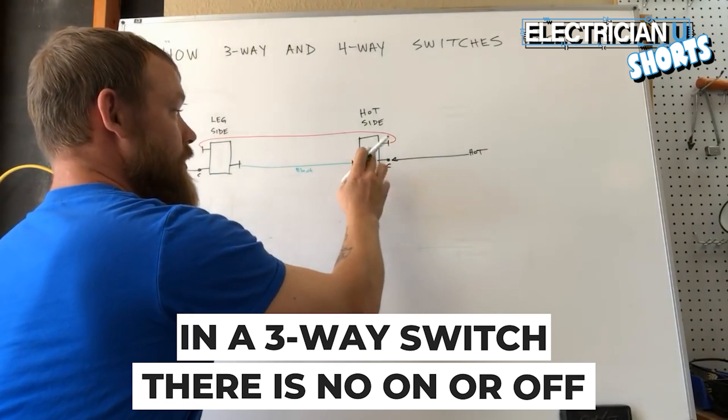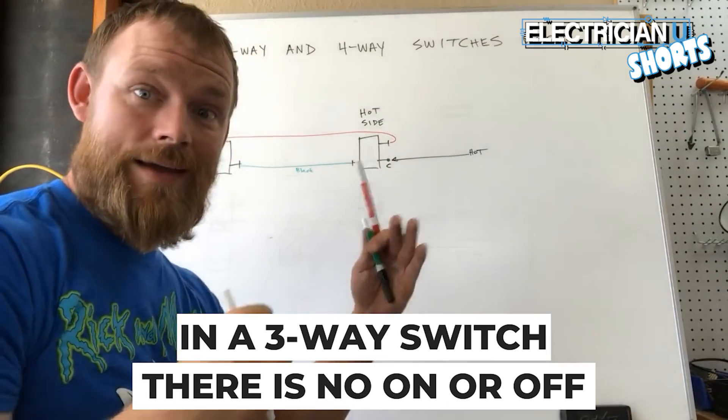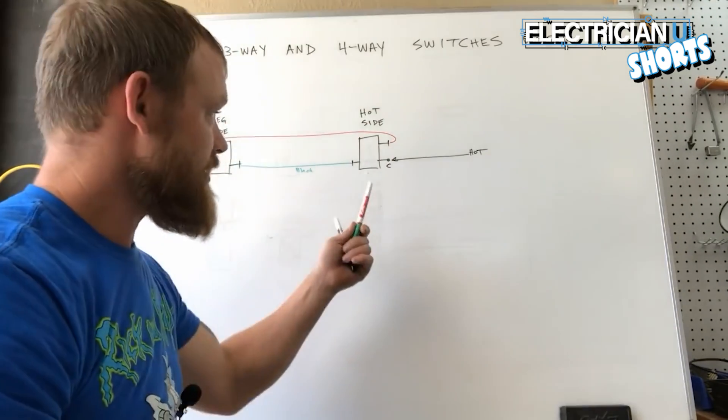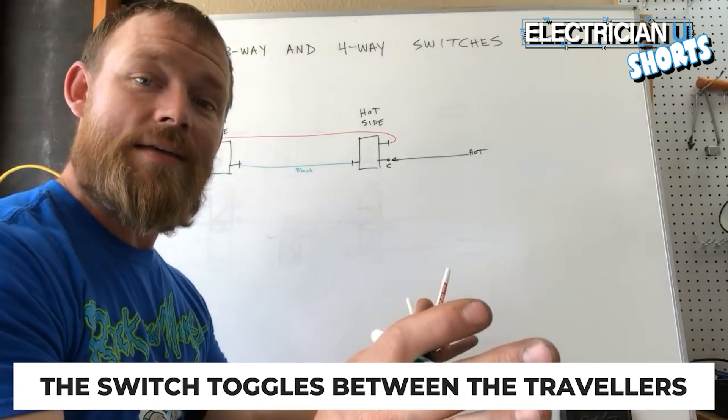But with a three-way switch there is no on or off. There is no connected and not connected like there would be in a single pole switch. A three-way switch just gives you two different paths that current can take.